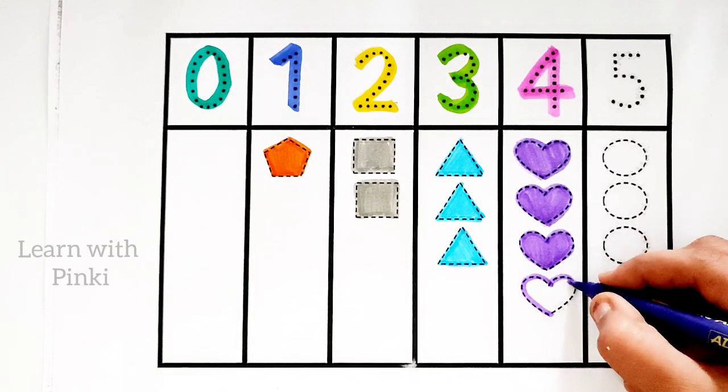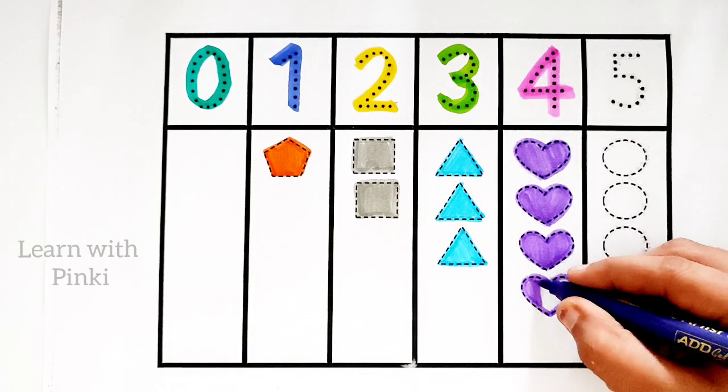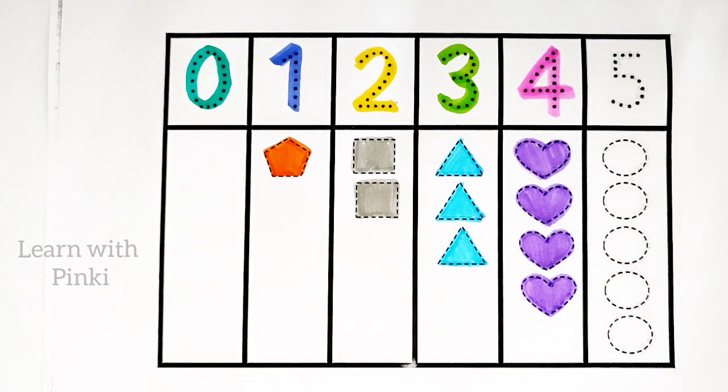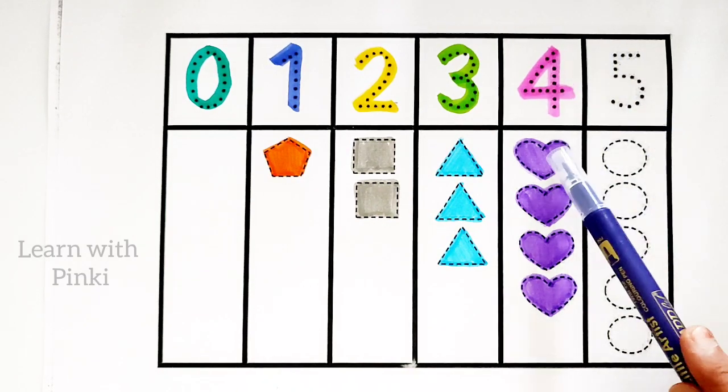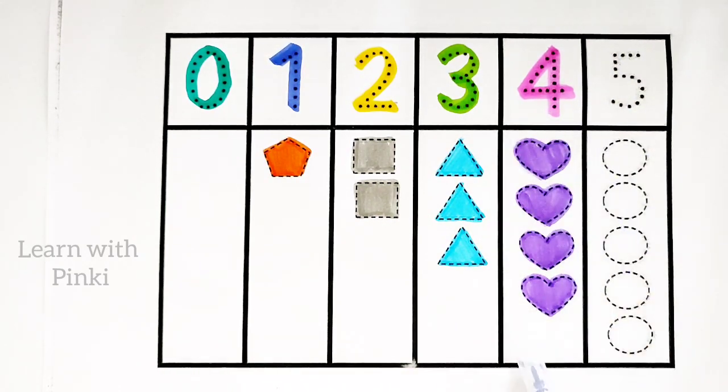4, 4 hearts, 4 hearts, 4 hearts. Number 4: 1, 2, 3, 4, 4 hearts.